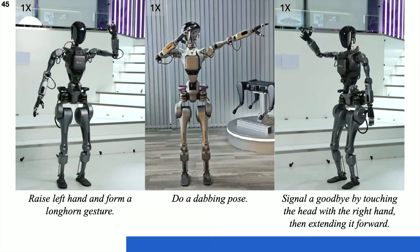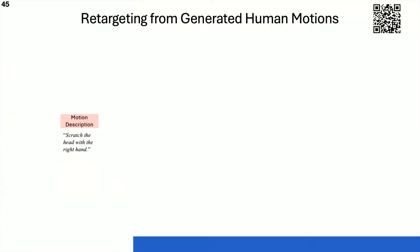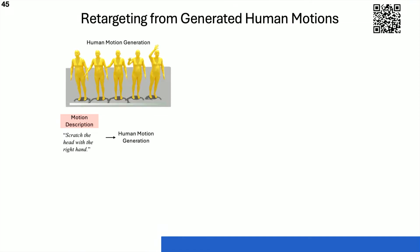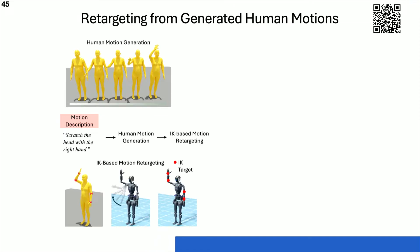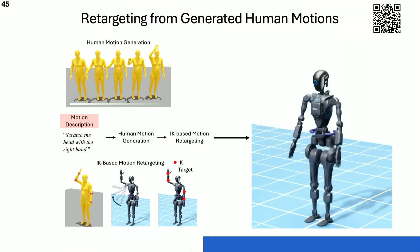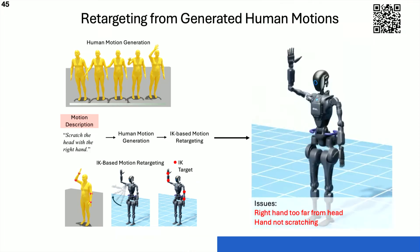Starting from a motion description, we first generate human motion, and then we retarget to humanoid. However, the resulting motion generally follows the text, but it's not accurate enough due to the gap between human and humanoid.